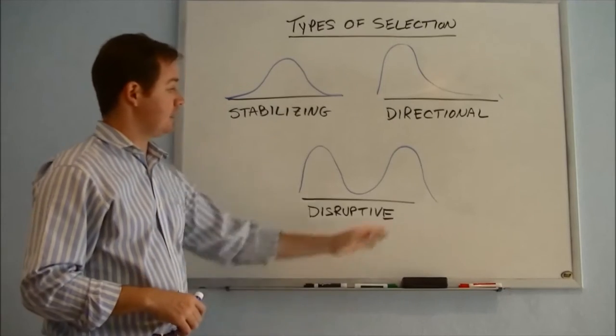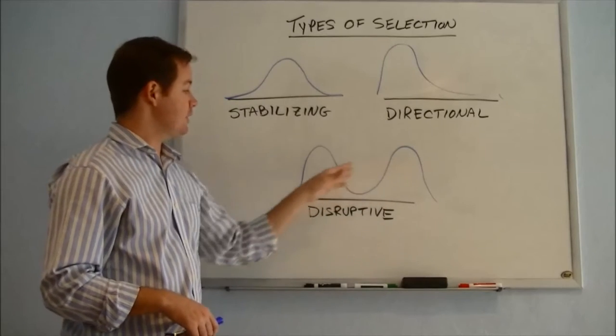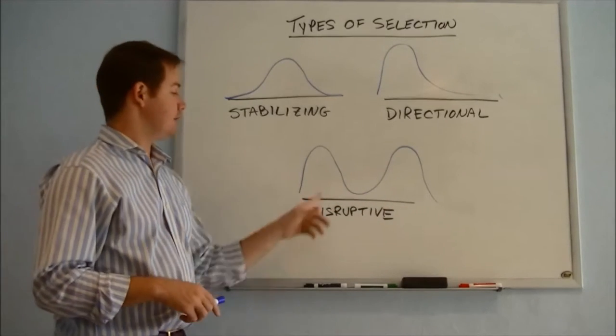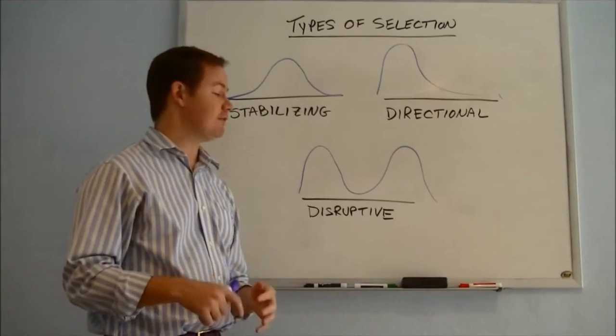So this might be something like the larger individuals that can protect themselves against predators survive. The smaller ones that can hide are able to survive. But then right in the middle, it's maybe a little bit less favored.